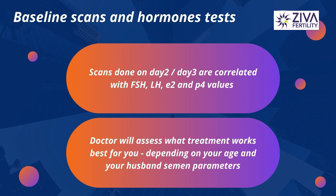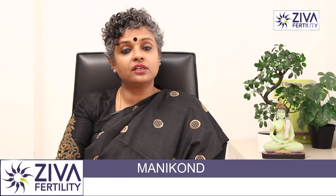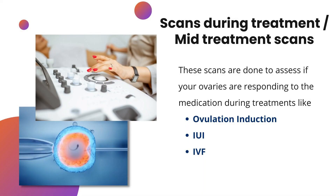Scans done on day 2 or day 3 are matched with your FSH, LH, E2, and P4 hormone values at that time. These are called baseline scans and hormones, and your doctor will assess what treatment works best for you, depending on your age and your husband's semen parameters. These are very critical decisions your doctor takes when treating you for infertility. That's what a baseline day 2 scan involves.